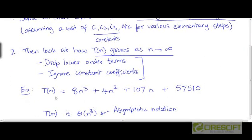For example, if the expression for T for any algorithm turned out to be 8n³ plus 4n² plus 107n plus 57510, we would drop the lower order terms, which means these terms would get dropped. And we would ignore the constant coefficients, which means this 8 would get ignored. And then we would represent T as theta of n³ by this theta notation or this asymptotic notation.